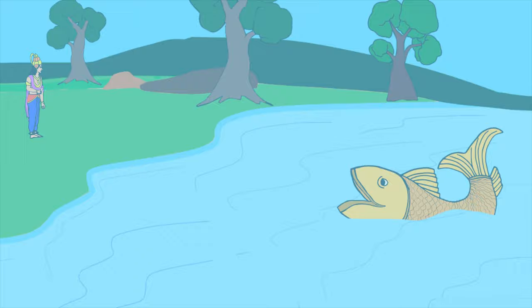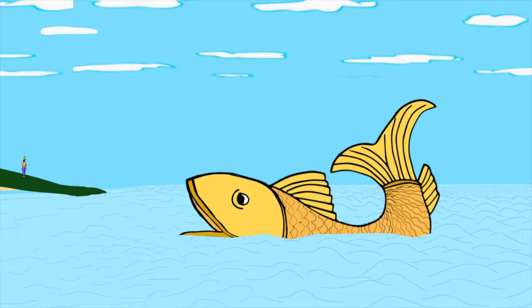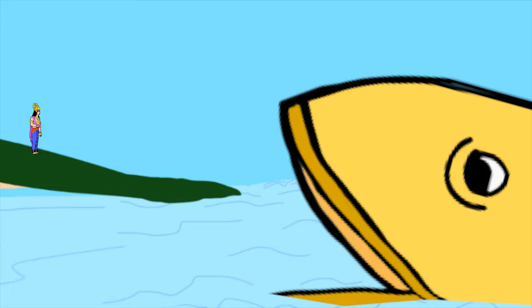But the fish outgrew it again and so he had to move it to a pond, then a lake and finally the ocean. But the fish still kept growing. The king realized that this could only be Lord Vishnu and submitted himself.